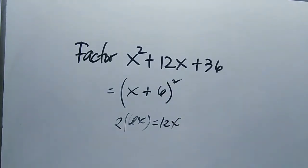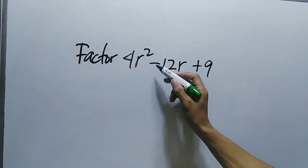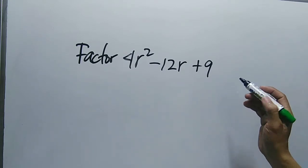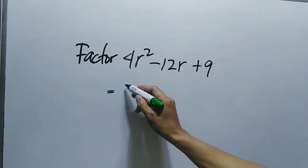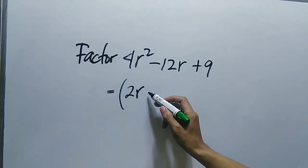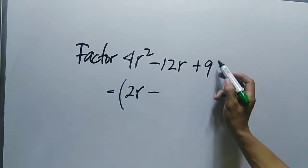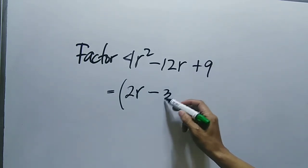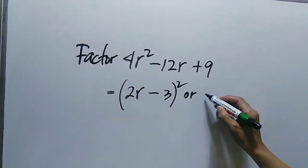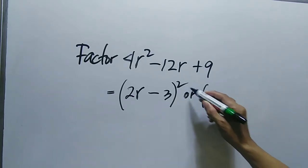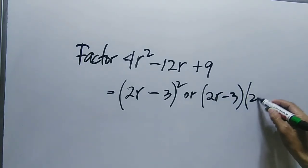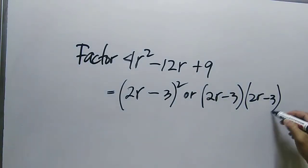We will factor 4r² - 12r + 9. This is still a perfect square trinomial. We take the square root of 4r², which is 2r. It is negative, so we write negative. The square root of 9 is 3 because 3 times 3 is 9. So the factored form is (2r - 3) squared, or equivalently (2r - 3)(2r - 3).